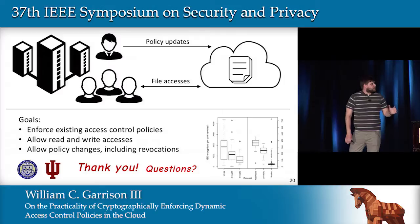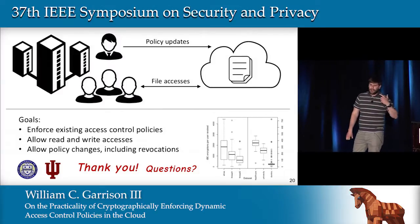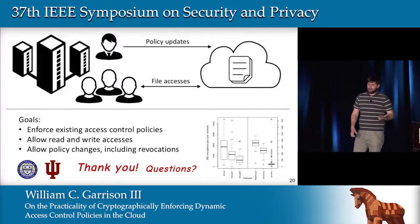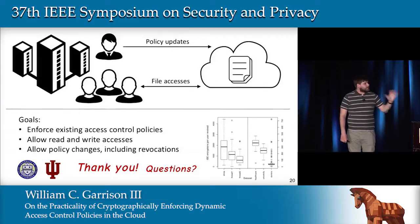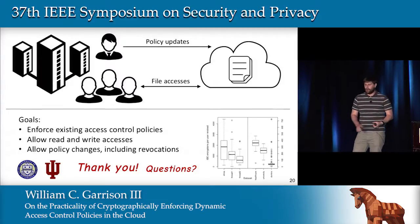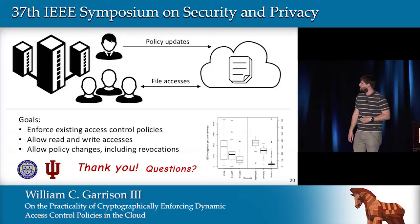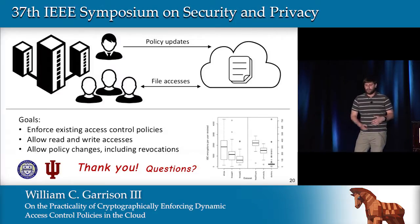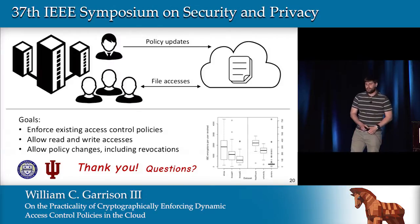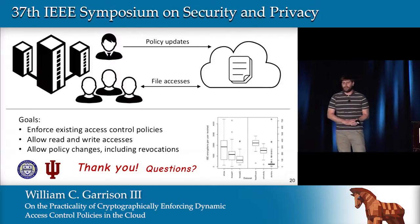So, in conclusion, we assumed a really simple system model, looked at a mild amount of dynamism, made optimistic design choices, and showed that still the costs of using advanced crypto for access control on an untrusted platform are likely prohibitive—highlighting the importance of those areas of future research I mentioned in order to make this goal achievable. Thank you for your attention. I'll take any questions you have.